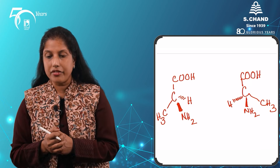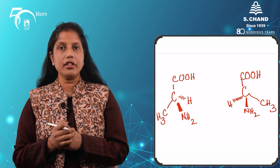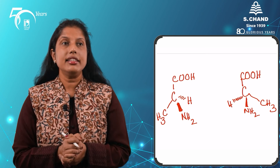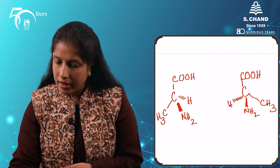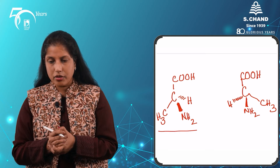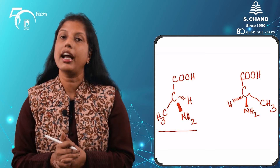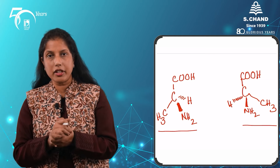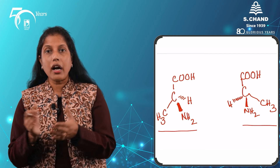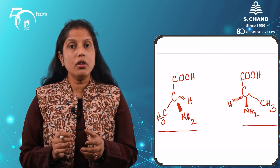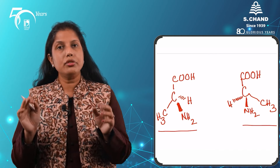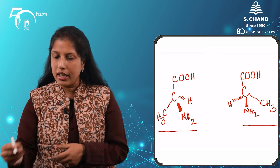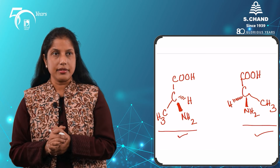Here you can see that I have drawn the two enantiomers of the molecule alanine — an essential amino acid present in our body. The alanine structure on the left is our natural alanine, the one that is metabolized in our body. The one on the right is our unnatural alanine and it cannot be metabolized in our body. So how can we distinguish between the two? How do we distinguish between them, and is there a unique name we can give to both of these structures? Let's take a little break and come back to look at how we can distinguish between the two.